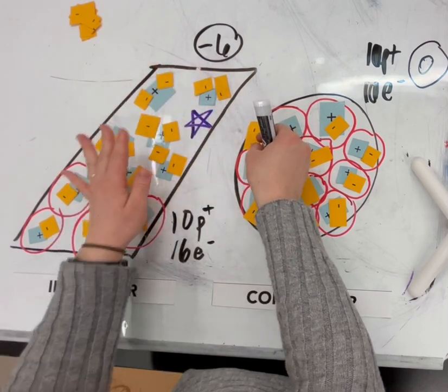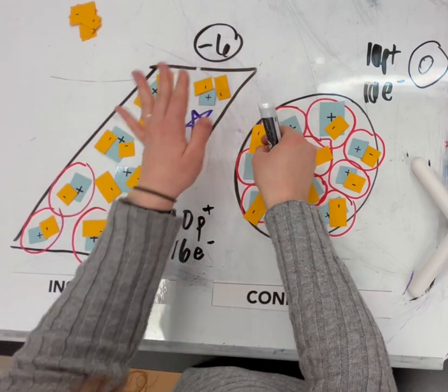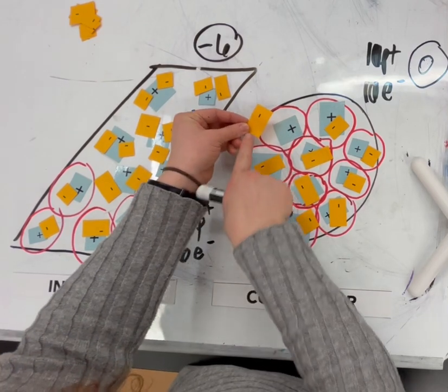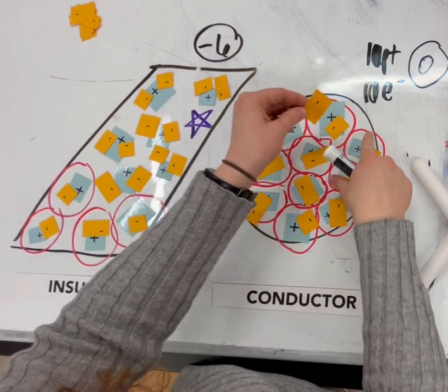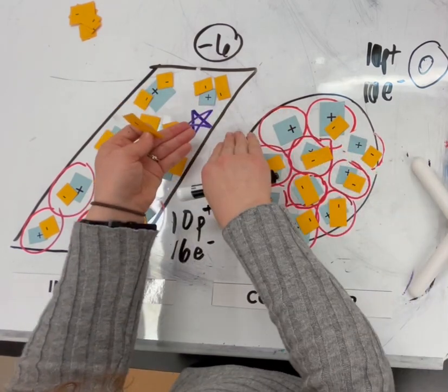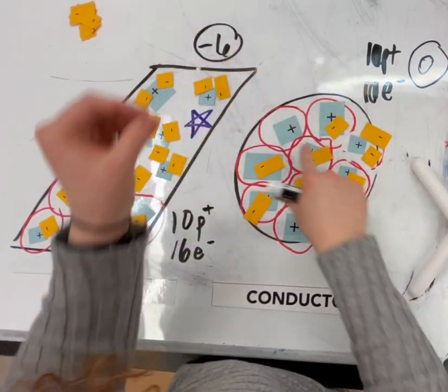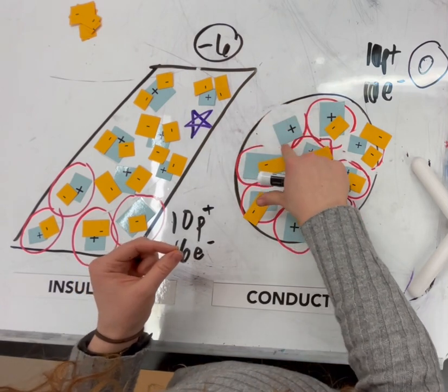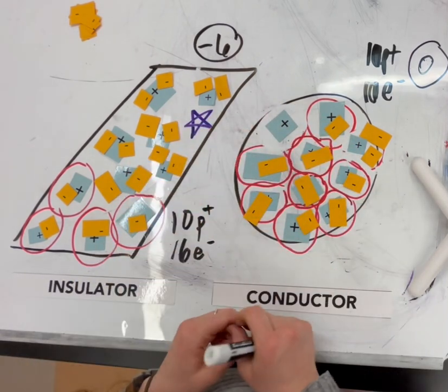It doesn't want to be close to these negative, this big negative charge. And so this electron is going to move to the other side. So it moves from the left to the right side of the pithball, leaving an exposed proton.